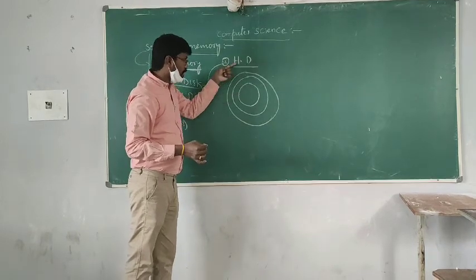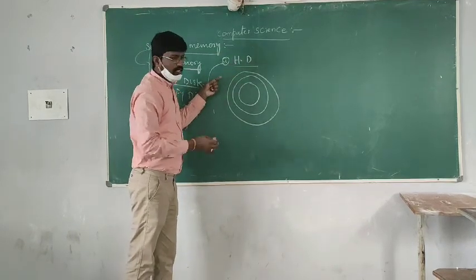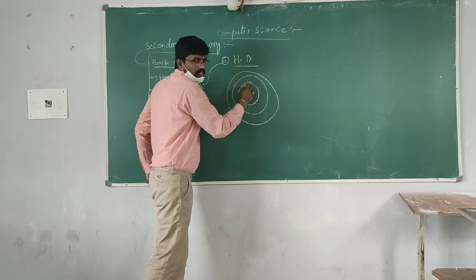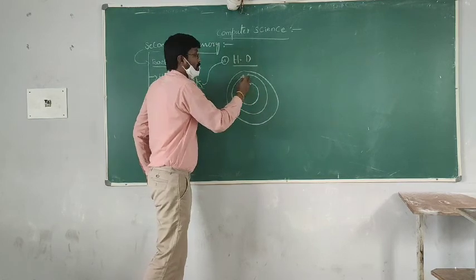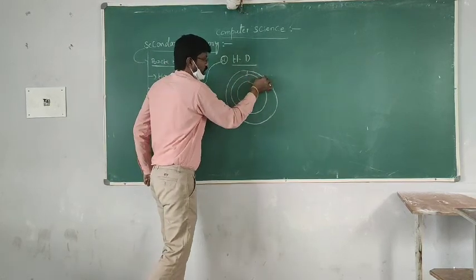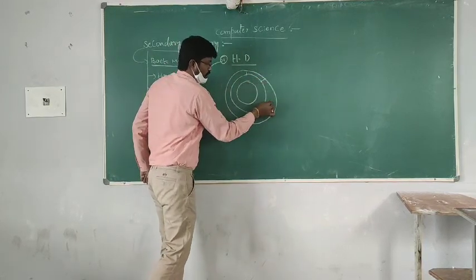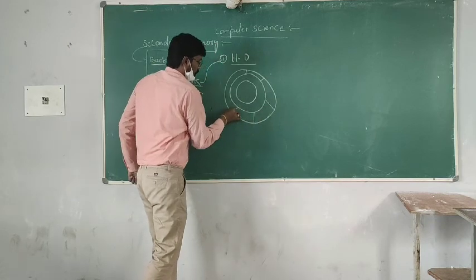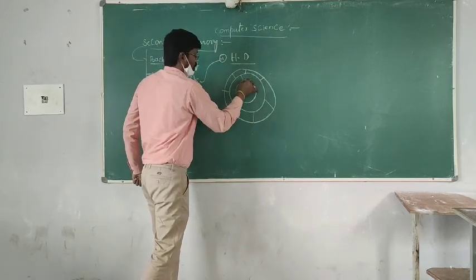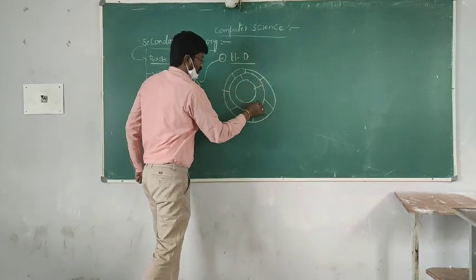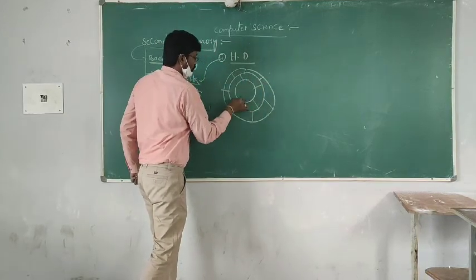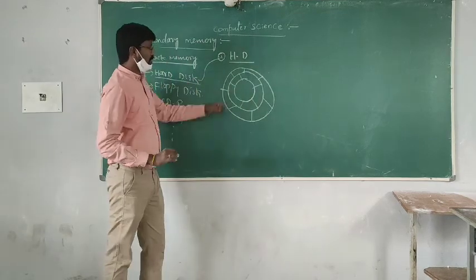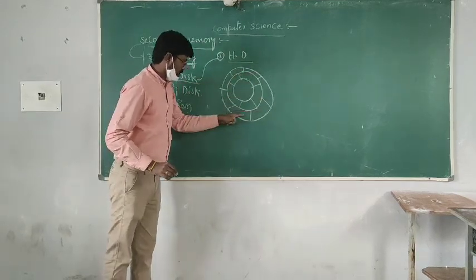Hard disk is made up of a number of surfaces. Each surface is divided into a number of tracks. And each track is divided into a number of sectors.